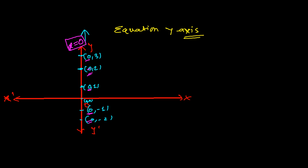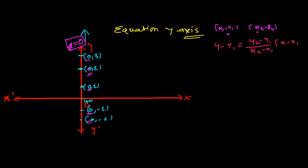If you want to prove x equals zero using the two-point formula, we can do that. The two-point formula says: if we have point one with coordinates (x1, y1) and point two with coordinates (x2, y2), then the equation of the line passing through them is: y minus y1 equals (y2 minus y1) over (x2 minus x1) times (x minus x1).